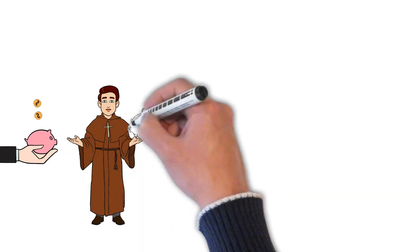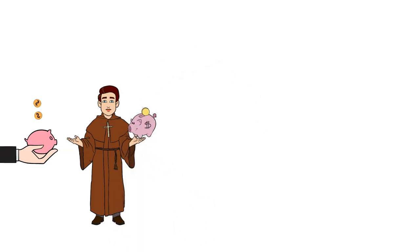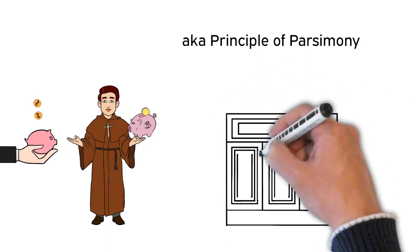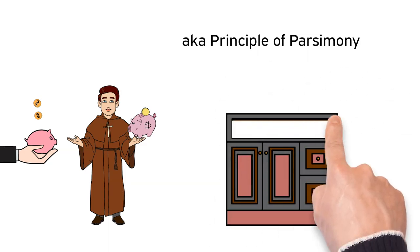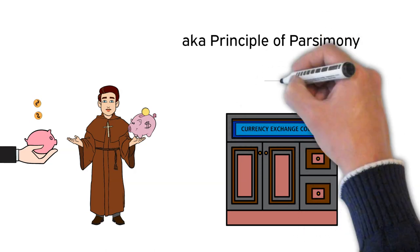Thrift is relevant when discussing Occam's razor because Occam's razor is also known as the principle of parsimony. Parsimony means thrift or frugality, and if we capitalize on this metaphor, we could imagine a world where each theory or assumption costs money to use.